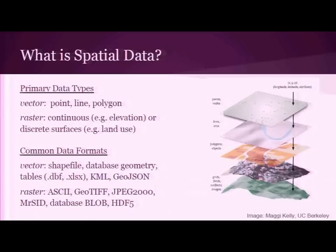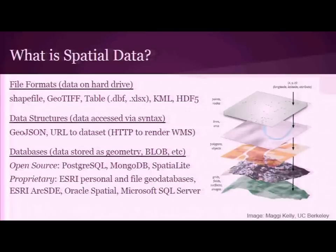Common data formats — you're probably familiar with these. I've listed GeoJSON as a vector data format, but in reality you can actually store raster data within it, though it's not as commonly done. Similarly with HDF5, most people use that as a raster dataset, but you can use it for vector. Spatial data also lives in different places: file formats on your computer or server, data structures accessed via syntax or WMS, and databases where data is stored as geometry.